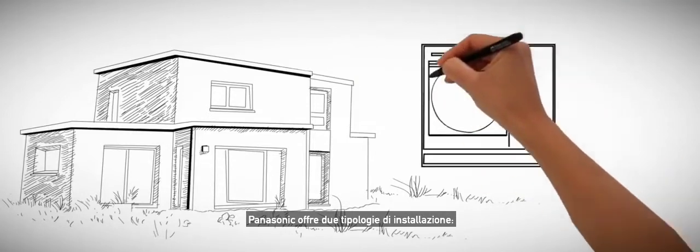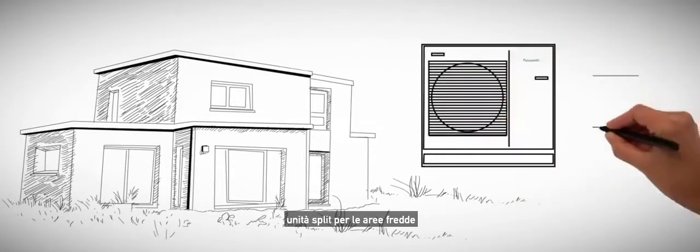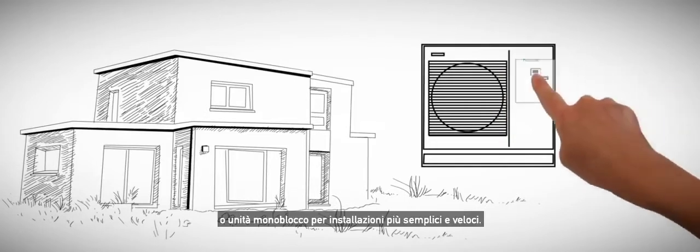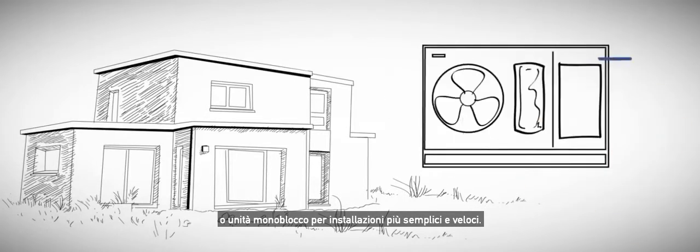Panasonic offers two types of construction: split units for installation in cold areas or monoblock units for simple and space-saving installation.